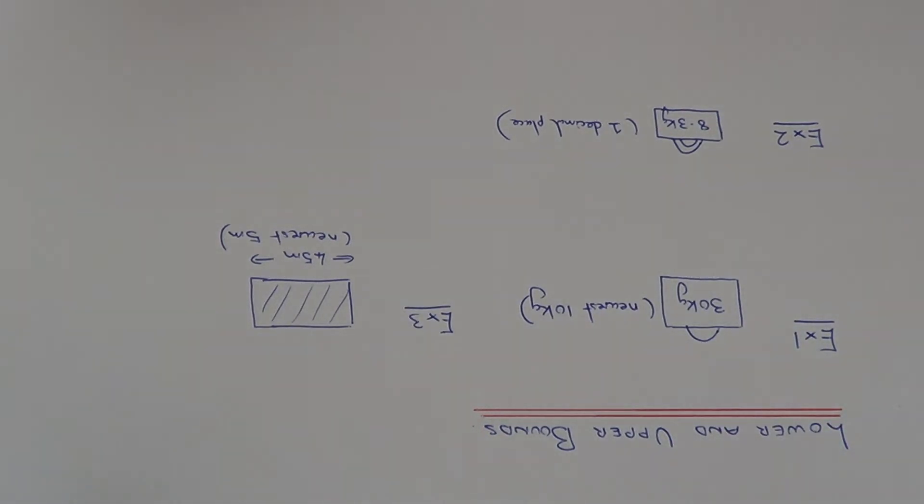Today I'm going to show you how to quickly work out the lower and upper bound of a measurement. The lower bound is the lowest value that a number could take and the upper bound is the highest value that a number could have been.